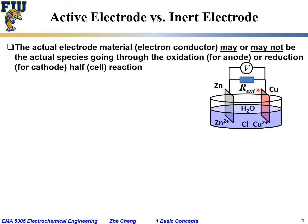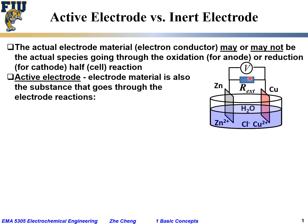To give an example, let's look at the copper-zinc battery: copper and zinc metals inserted into an electrolyte solution containing zinc ions, copper ions, and chlorine ions. The two metals are connected through an external circuit with a certain resistance, which can be infinite for an open circuit. Here, both electrodes are active electrodes.